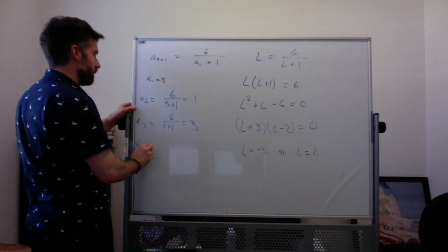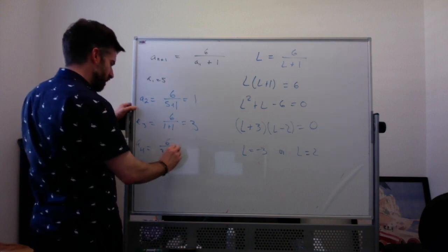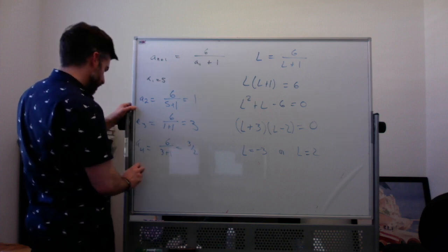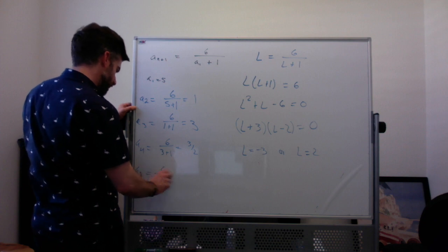A sub 4 is 6 over 3 plus 1, which is 6 over 4, which is 3 over 2. A sub 5 is 6 over 3 halves plus 1.